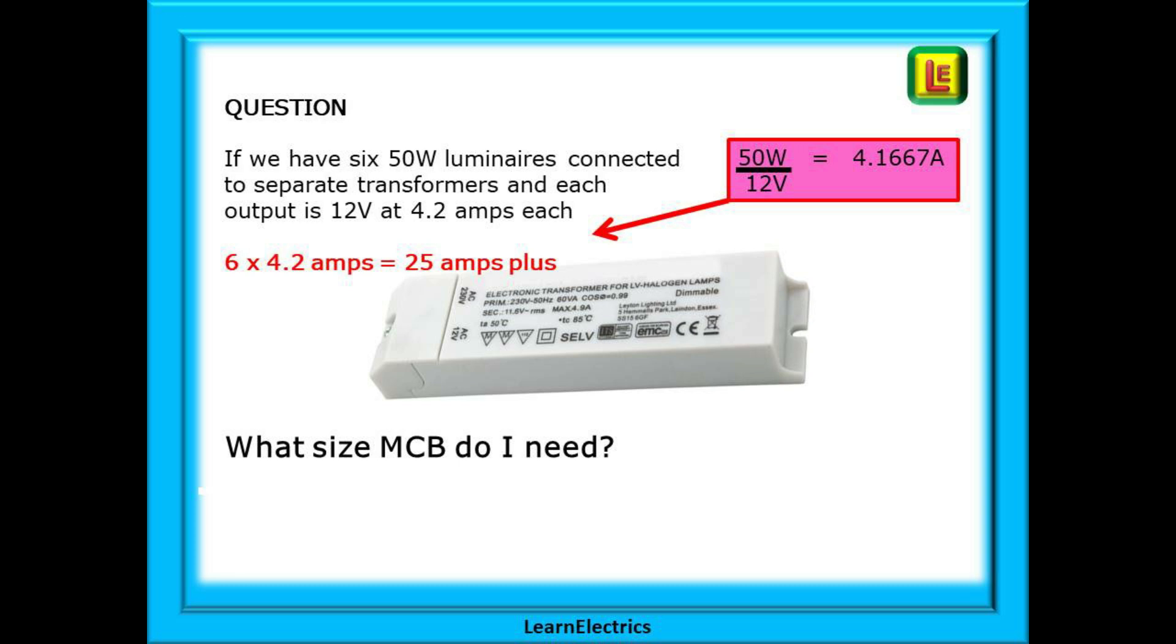We have six 50-watt luminaires connected to six separate transformers, and each transformer output is 12 volts at 4.2 amps each. If we add up all the loads for the lights, we get 6 times 4.2 amps, which is over 25 amps.